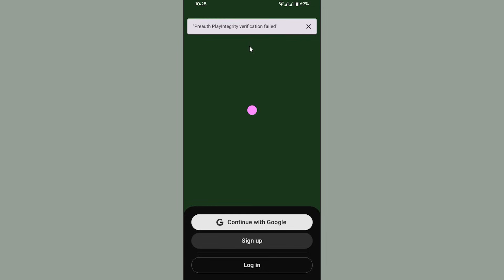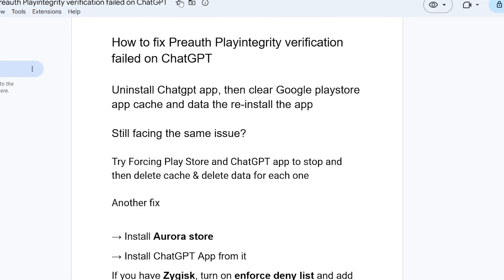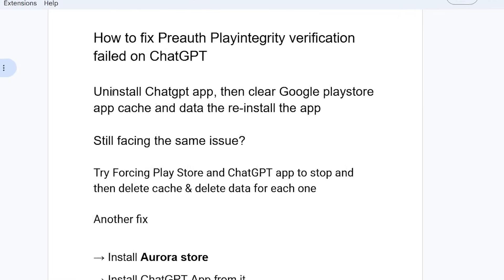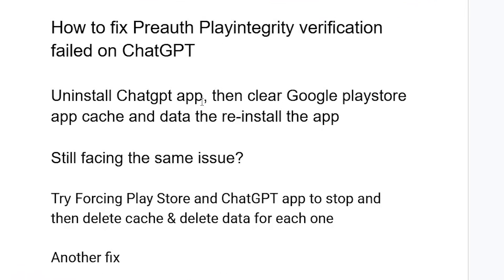Luckily there is a solution for this problem. The first step is to uninstall the ChatGPT app on your Android phone, then clear the Google Play Store app cache and data, then reinstall the app. If you've done so but you're still facing the same issue, try forcing Play Store and ChatGPT app to stop and then delete cache and data for each one.